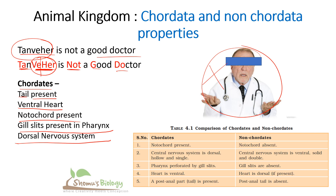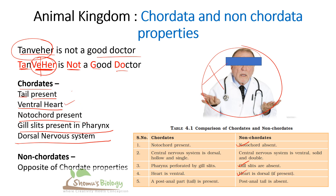Non-chordata properties are exactly opposite to all chordata properties. Tail is not present; notochord is absent; gill slits are absent in the pharynx; heart is on the dorsal side (in chordates it is ventral); and post-anal tail is absent in non-chordates, whereas it is present in chordates. That is how you easily remember the difference between chordata and non-chordata.